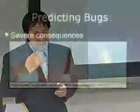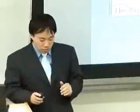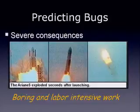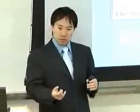Similarly, in 1996, the Ariane 5 flight machine had a bug inside. The problem was they tried to convert a 32-bit floating point number to integer, and the number overflowed. Because of that, at 40 seconds after its launch, it exploded. So the point here is bugs have really severe consequences. However, the debugging process is really boring and very labor-intensive work. Most people hate debugging.